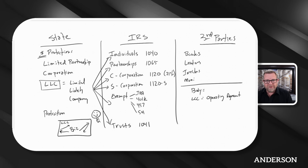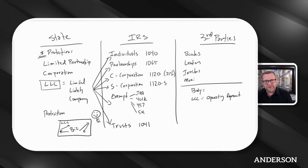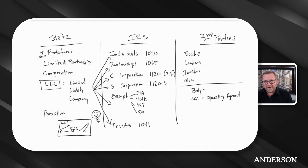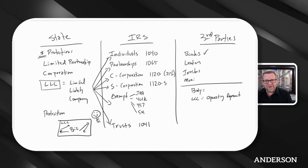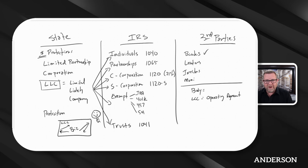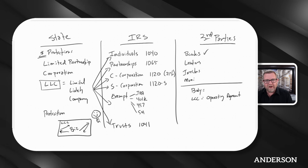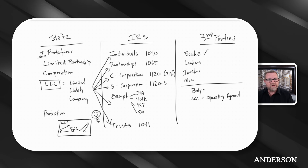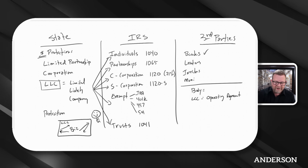We're almost always using managers, but the operating agreement is going to say who has the right to manage the company and what rules they're operating under. You can understand why a bank might want to know that — if I'm setting up a bank account, who can access it? Can they just drain the account? They want to see that operating agreement so they know the parameters and that those folks have the authority to bind the LLC.